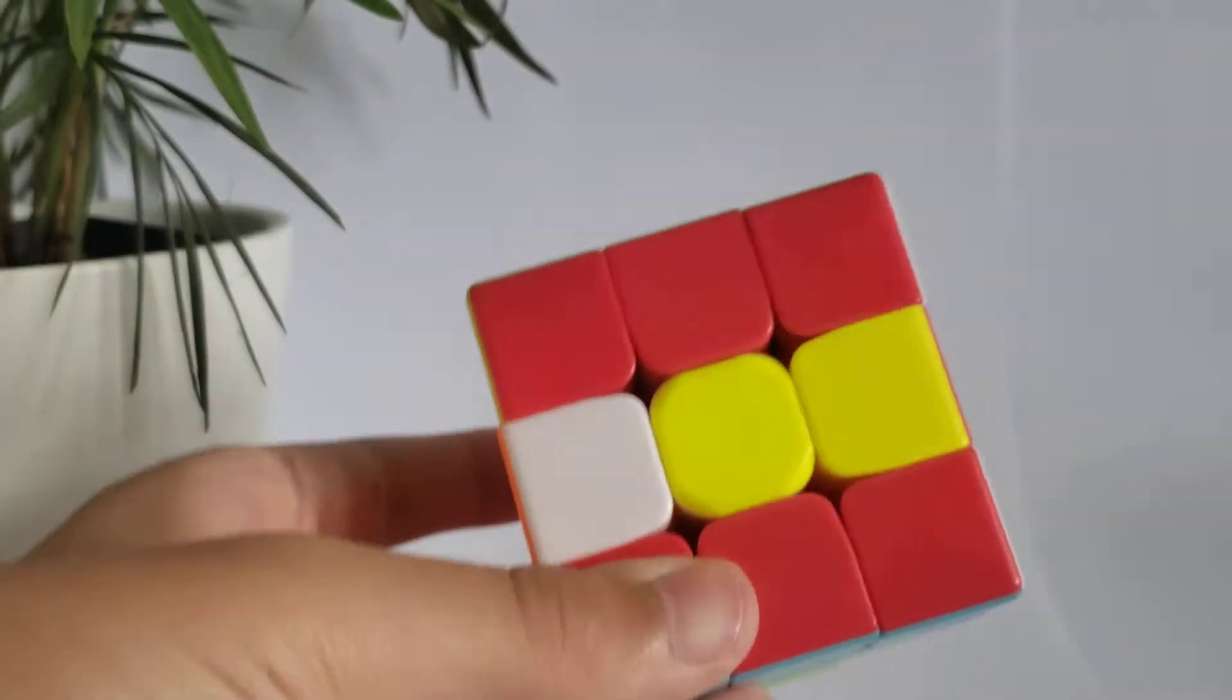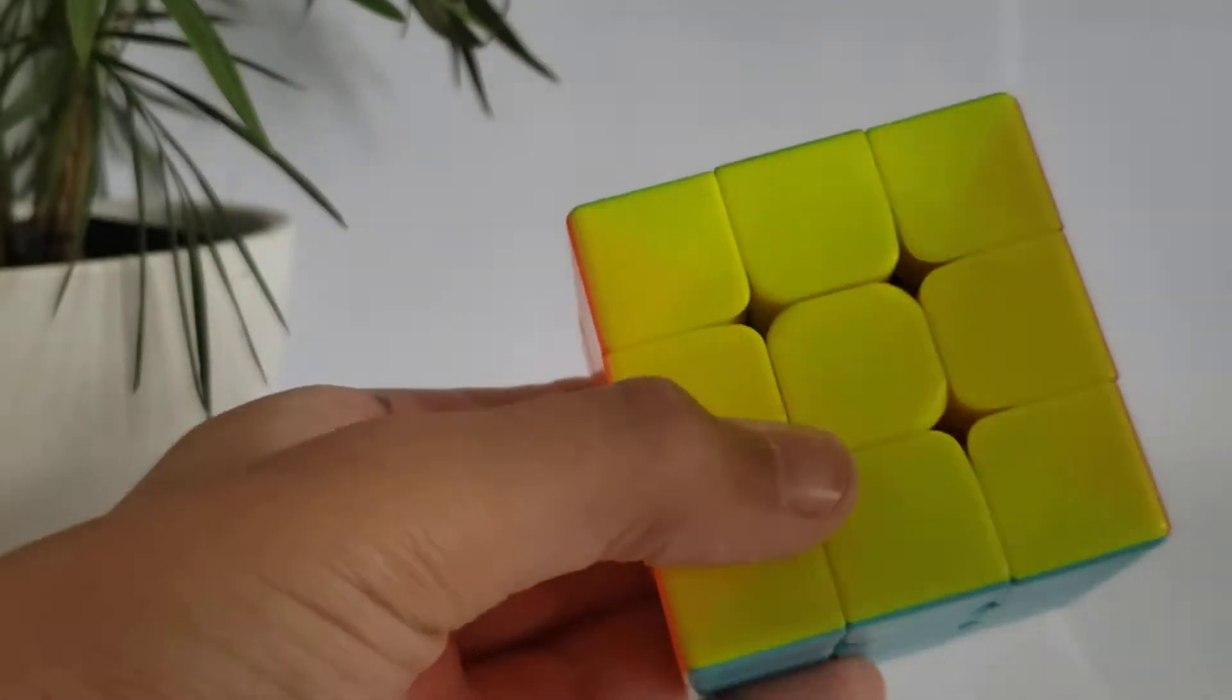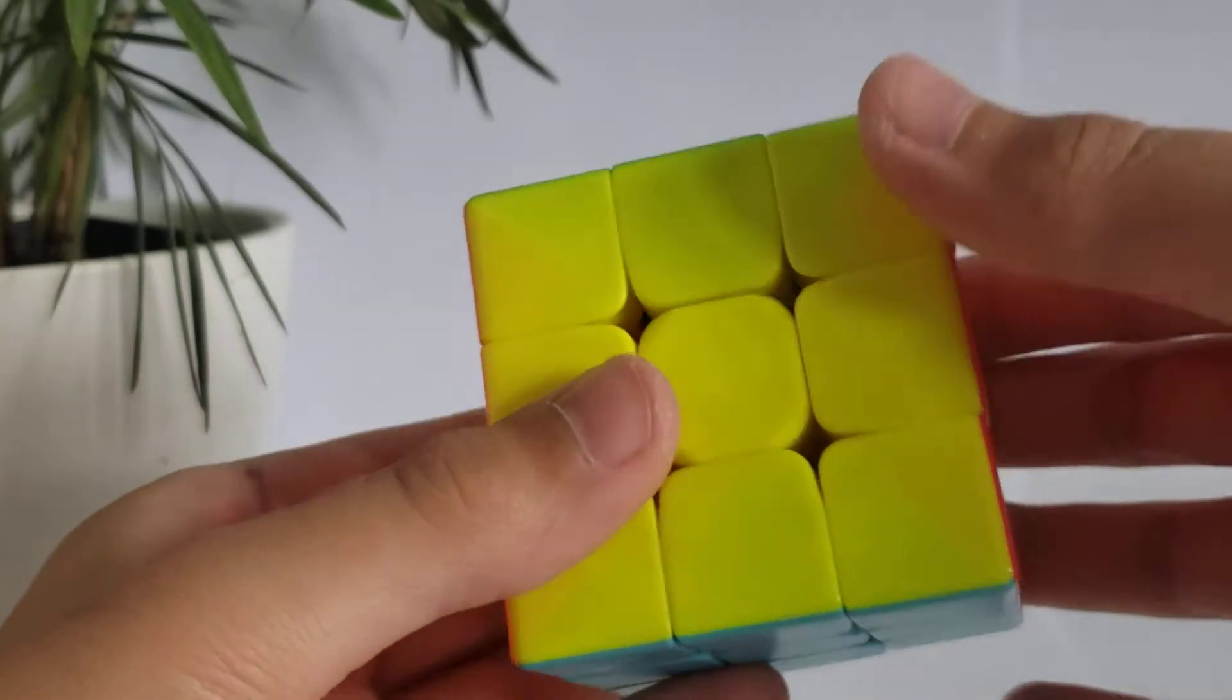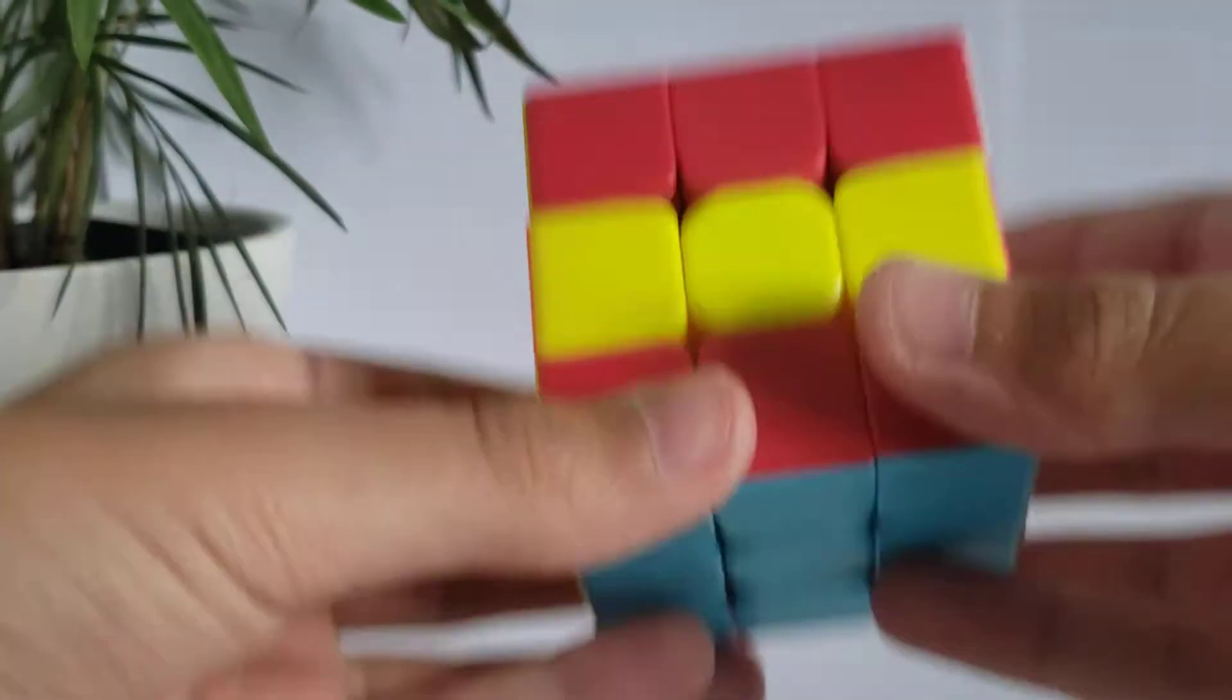This is how to make the Spanish flag in a Rubik's Cube part two. So last time I just moved the top one across and the bottom one across and that's the Spanish flag.